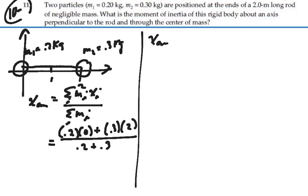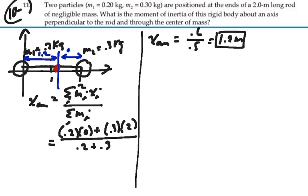So our center of mass is going to equal 0.6 divided by 0.5, or 1.2 meters. At x equals 1.2 meters, right here, that is our center of mass. Make sense? So that means mass 1 is 1.2 meters away from the center of mass, and mass 2 is 0.8 meters away from the center of mass.